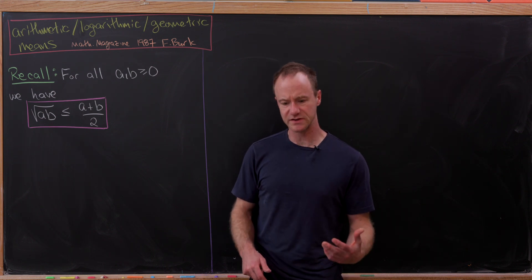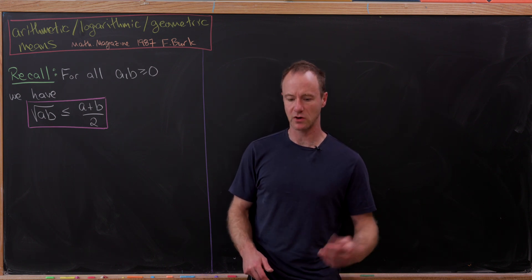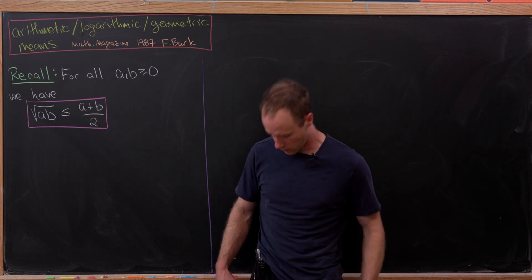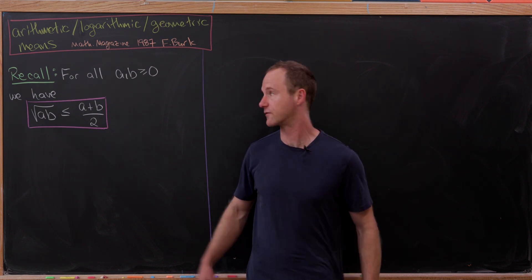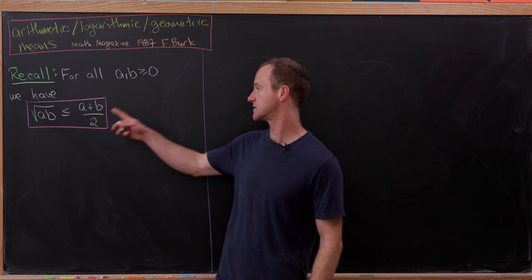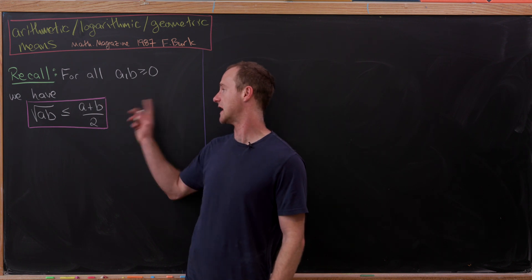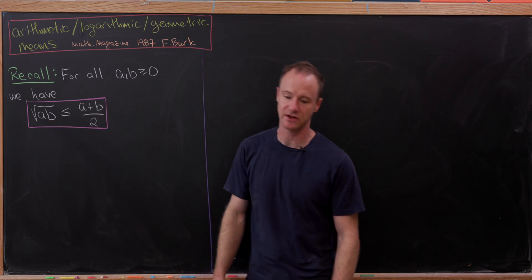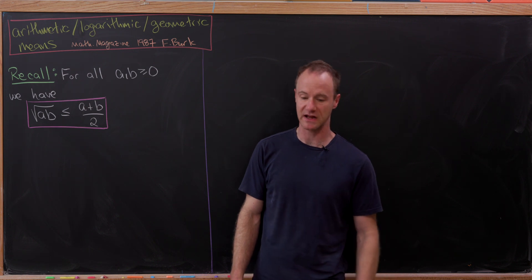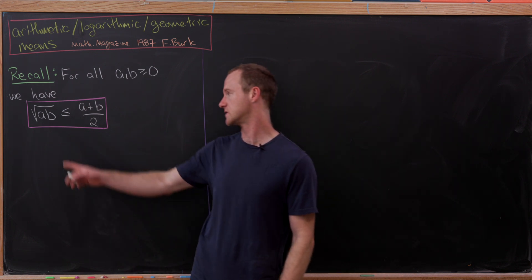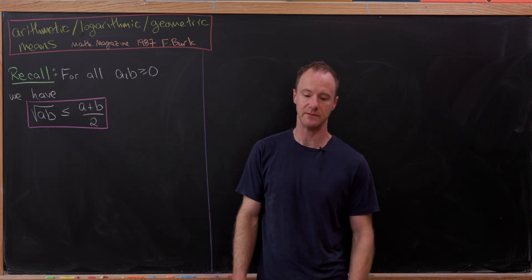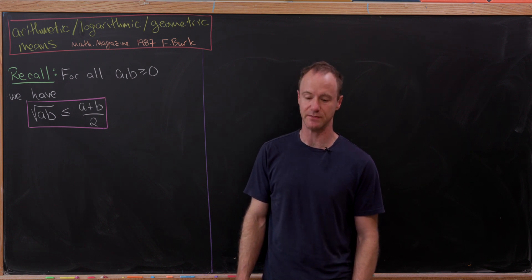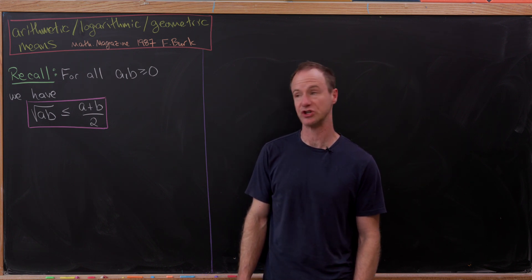Before we get started, I'd like to recall the arithmetic-geometric mean inequality, which says for all positive real numbers a and b, the geometric mean is less than or equal to the arithmetic mean. In other words, the square root of a times b is less than or equal to a plus b over two.